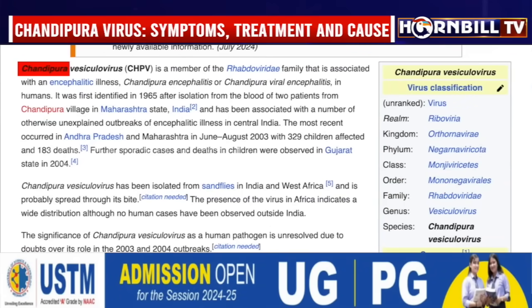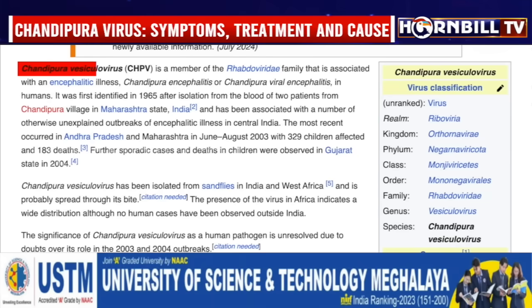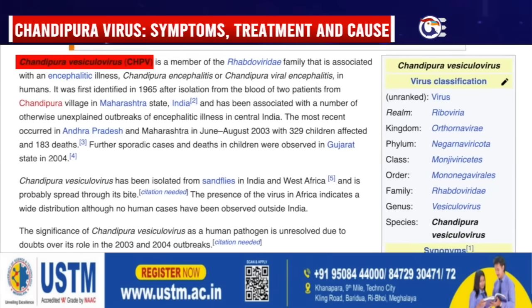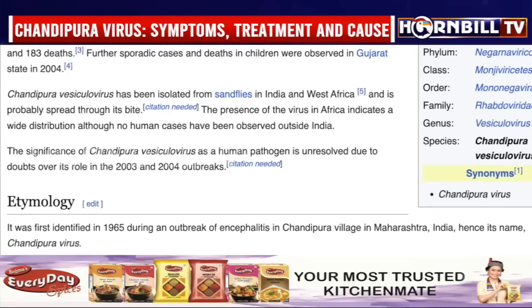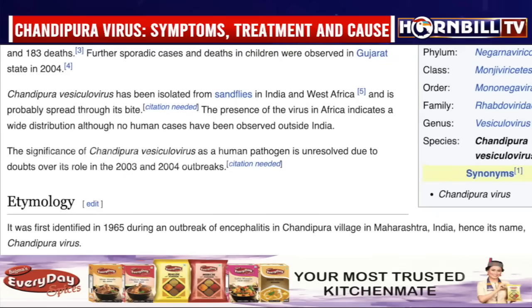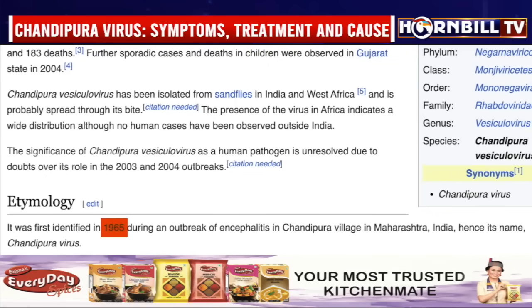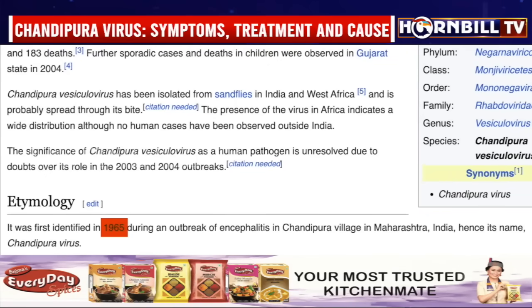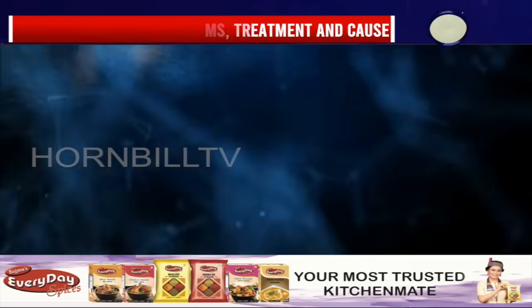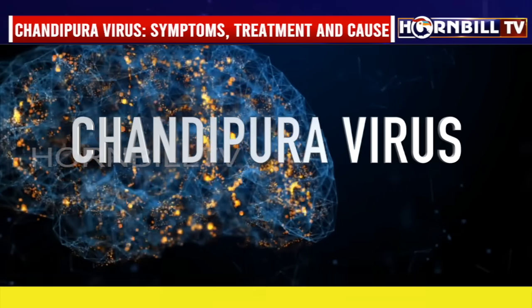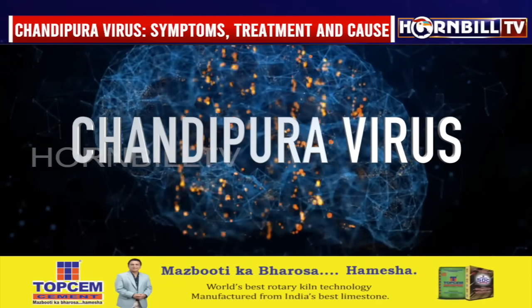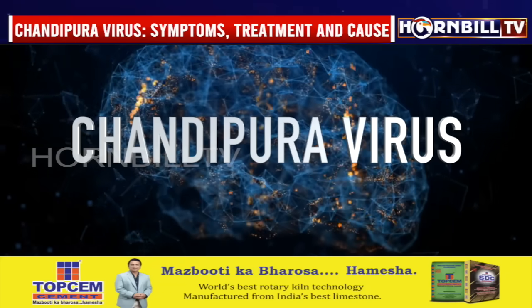Chandipura vesiculovirus, commonly referred to as Chandipura virus or CHPV, is a virus that belongs to the Rhabtoviridae family and was first identified in 1965 in the Chandipura district of Maharashtra, India. It is notorious for causing acute encephalitis, a severe inflammation of the brain, particularly in children.